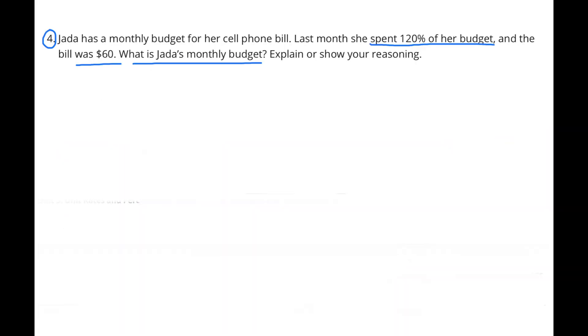Number 4: Jada has a monthly budget for her cell phone bill. Last month, she spent 120% of her budget, and the bill was $60. What is Jada's monthly budget? Explain or show your reasoning. Well, she spent $60, which was 120% of her budget. So $60 equals 120%.